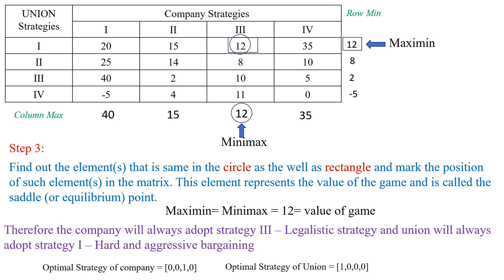This is a pure strategy game. The company selects only the third strategy, neglecting all others, so the optimal strategy of the company is (0, 0, 1, 0). The union selects only the first strategy, neglecting all others, so the optimal strategy of the union is (1, 0, 0, 0). This is the complete solution.